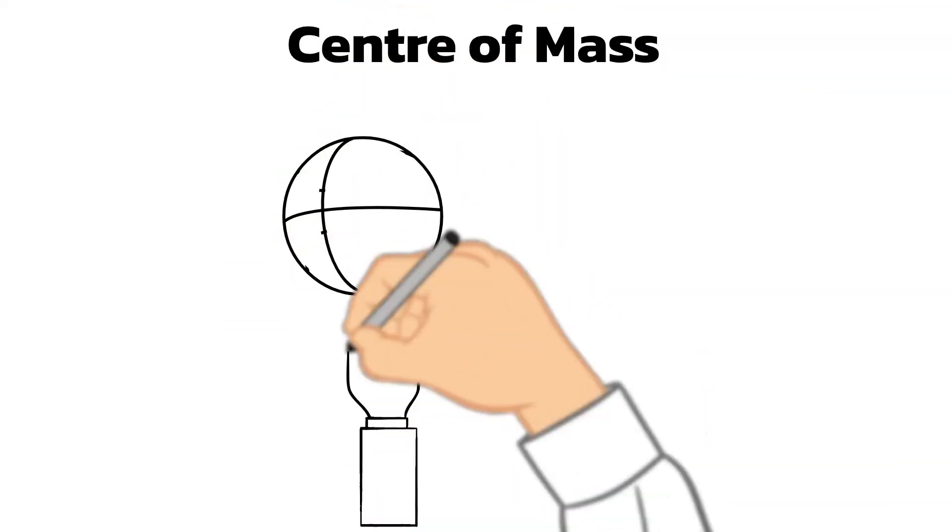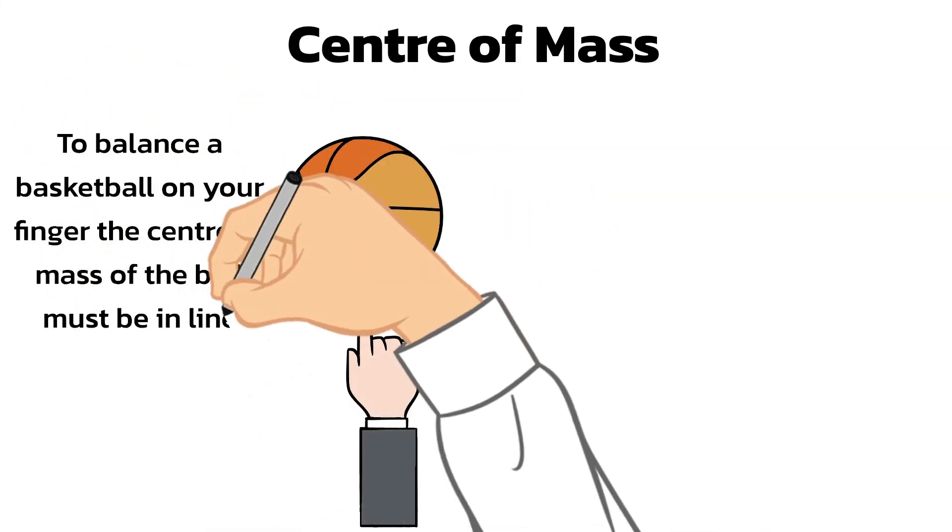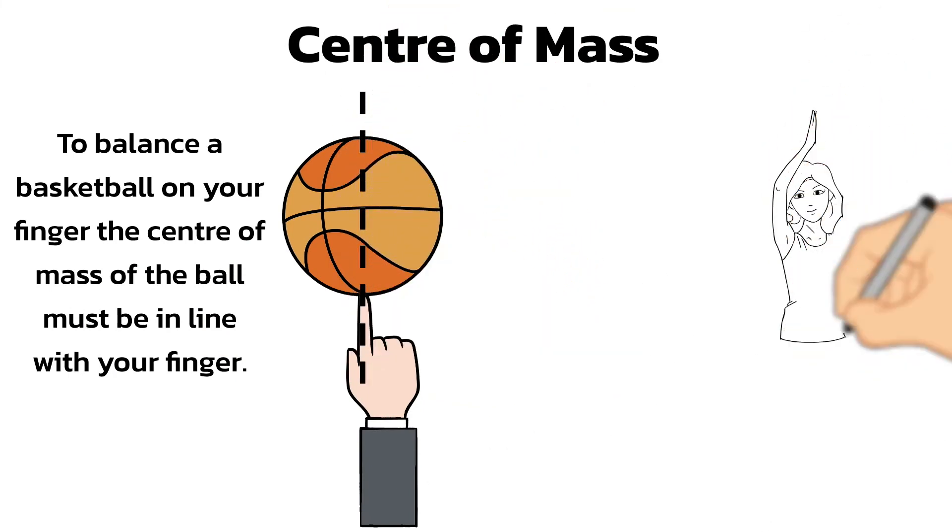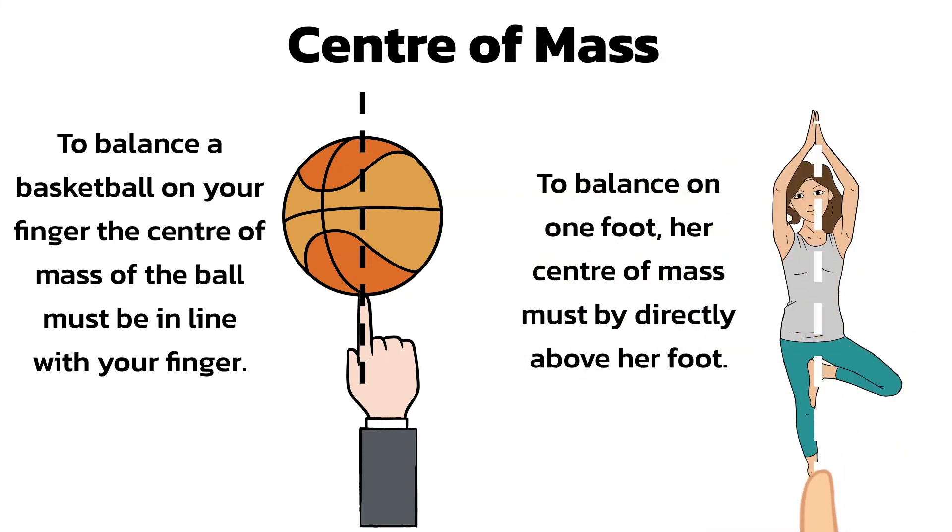To balance a basketball on your finger, the center of mass of the ball must be in line with your finger. In a similar way, to balance on one foot, this lady's center of mass must be directly above her foot. In both cases, if the line along the center of mass moves slightly, the ball will fall, and the lady will lose her balance.